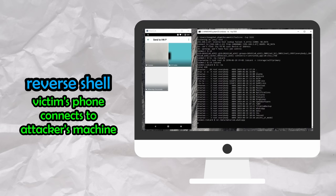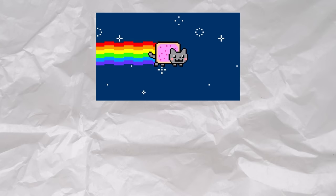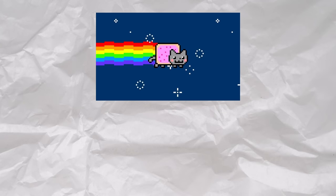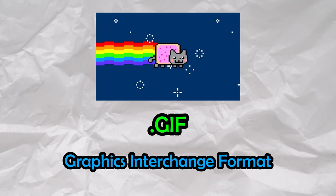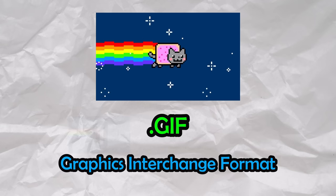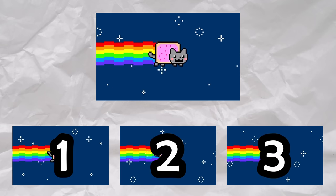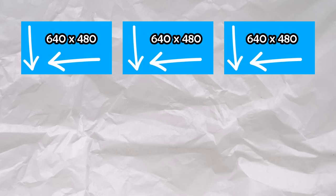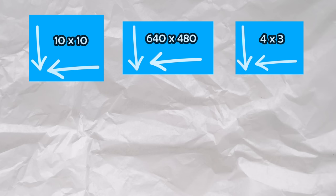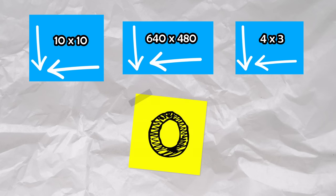In order to understand how this vulnerability works, we first need to understand the basics behind GIFs. A GIF, or Graphics Interchange Format, is an image file format capable of containing multiple bitmap frames, resulting in video playback. Normally the frames all have the same size, however this is not enforced by the GIF specification — it is completely valid to construct a GIF where different frames are of different sizes, even including frame sizes of zero.